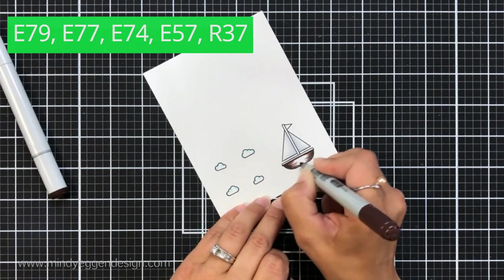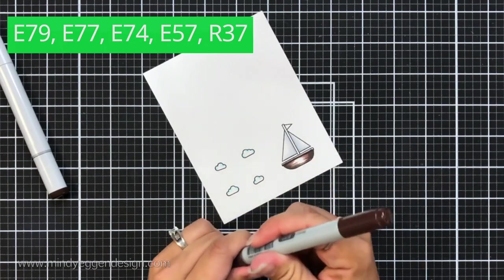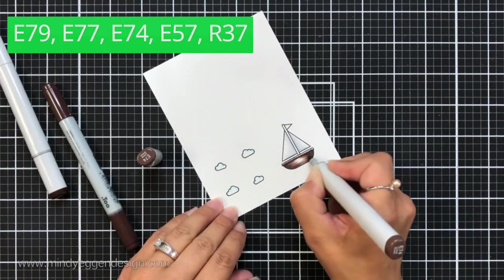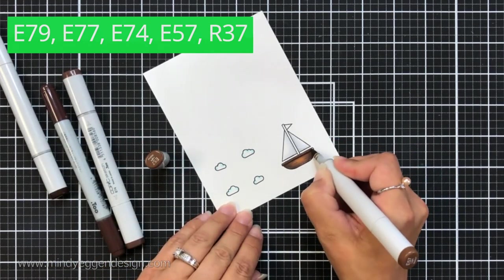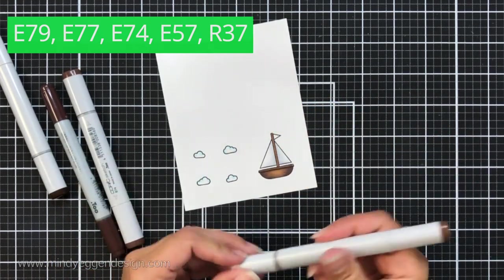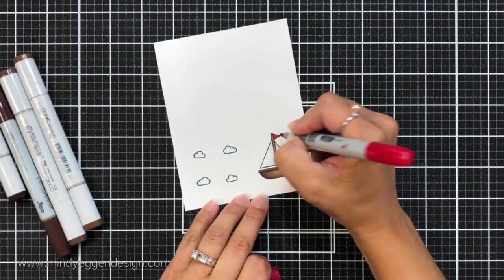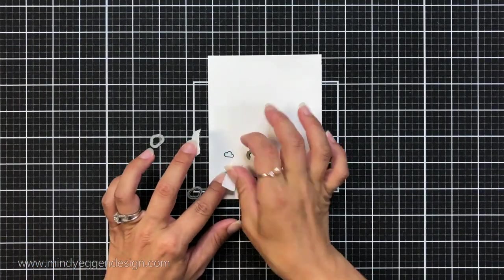And for the bottom of my boat I'm starting with the darkest color on the outside flicking in towards the center and I used E79, 77, 74, and 57 and then just R37 for a quick color to the flag.